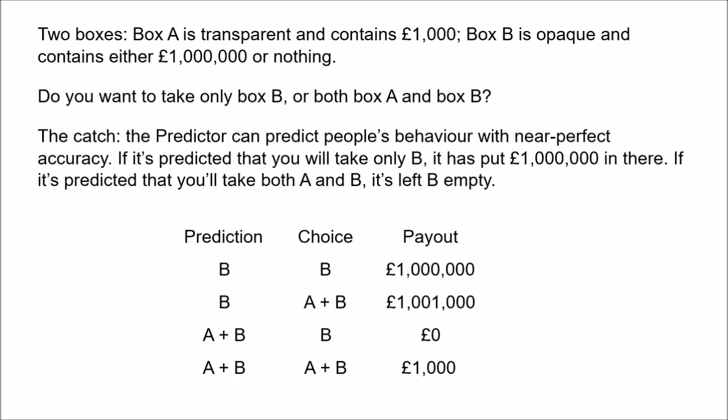Robert Nozick, who popularised this problem, once famously said of it that, and I quote, 'to almost everybody, it is perfectly clear and obvious what should be done. The difficulty is that these people seem to divide almost evenly on the problem, with large numbers thinking that the opposing half is just being silly.' And that description certainly fits me. I'm a militant one-boxer. I think that two-boxing is obviously absurd. However, many philosophers accept it — in fact, there's probably a slight consensus in favour of two-boxing, as far as I can tell.